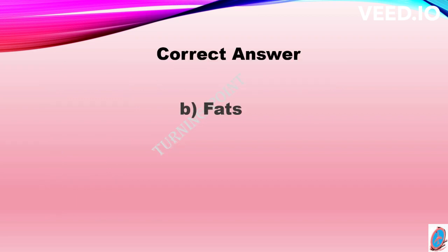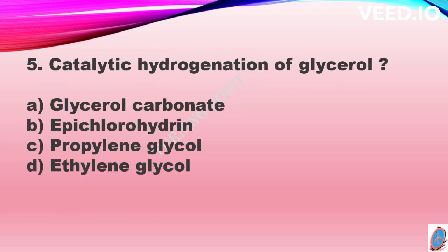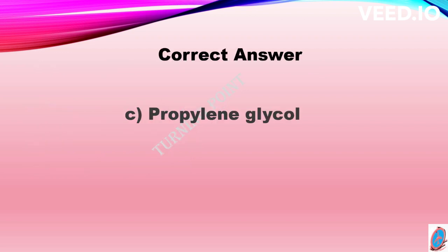The fourth question: catalytic hydrogenation of glycerol gives option A glycerol carbonate, option B epichlorohydrin, option C propylene glycol, and option D ethyl glycol. The correct answer is option C, propylene glycol.